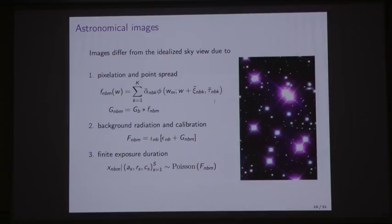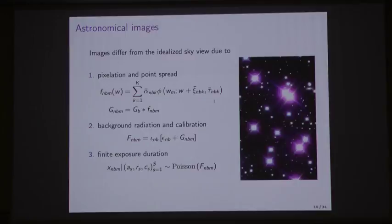That brings us up to the idealized sky view. To generate particular astronomical images, we have to account for pixelation and point spread. Over here on the right you see a bunch of stars. You'll notice they're not infinitely small dots, even though that's what I was saying they were earlier. The photons get blurred by the atmosphere and also by the optics of the telescope. The spikes off the side are called diffraction spikes, and those are induced by the telescope's optics. Rendering amounts to applying a convolution to the idealized sky view, convolved by the point spread function, which we model as a mixture of normal distributions. We also have to adjust for background radiation - light pollution and extraterrestrial sources of light. We also have a calibration constant iota.